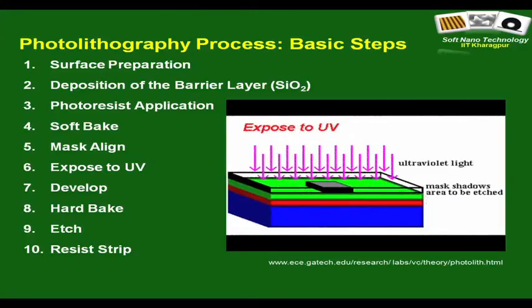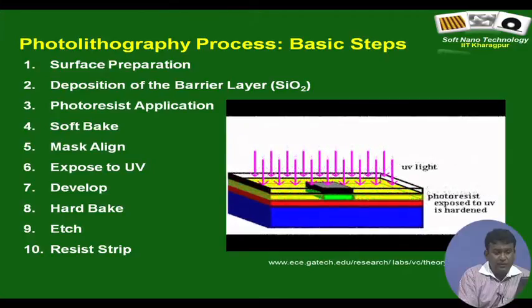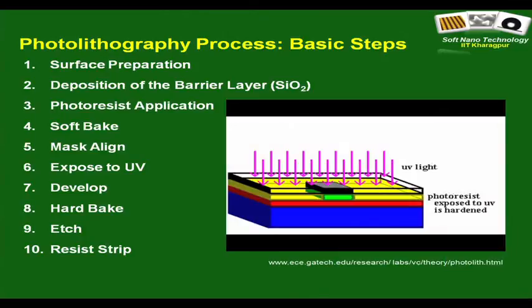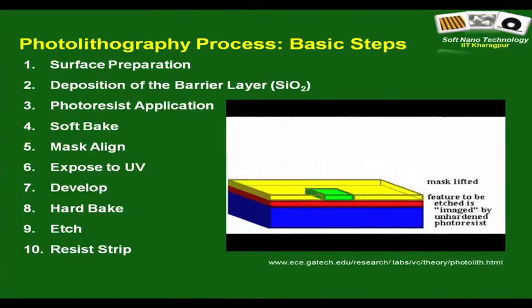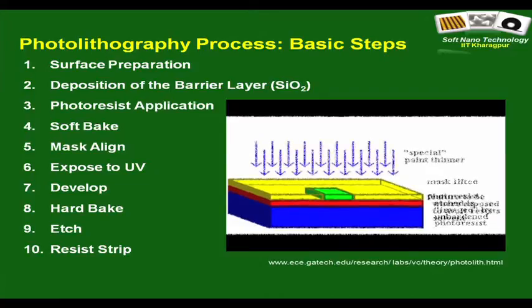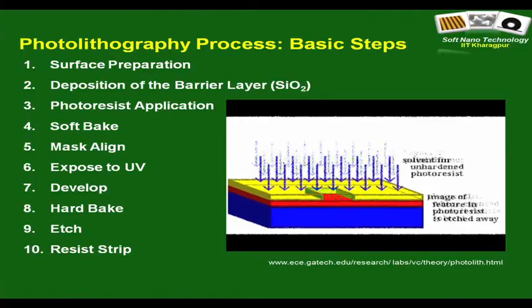As you do the UV exposure there is a change in property in the photo resist layer — this is hardening. It is a negative photo resist, as you can now conclude. Then you introduce the developer, which is mentioned as thinner in this.